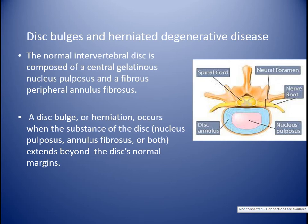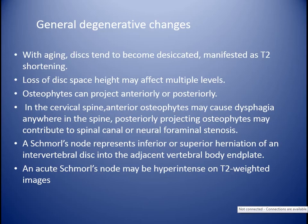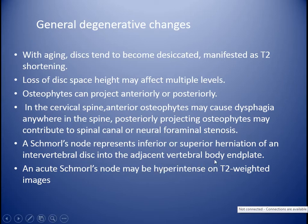Disc bulge and herniation: the normal intervertebral disc is composed of a central nucleus pulposus and peripheral annulus fibrosus. Disc bulge or herniation occurs when the substance of the disc — nucleus pulposus, annulus fibrosus, or both — extends beyond the normal disc margin. With aging, discs become degenerated, manifested as T2 shortening and decreased signal intensity on T2. Loss of disc space height may affect multiple levels. Osteophytes can project anteriorly or posteriorly. In the cervical spine, anterior osteophytes may cause dysphagia. Posteriorly projecting osteophytes may contribute to spinal canal or neural foraminal stenosis. Schmorl's nodes represent superior or inferior herniation of disc material into the adjacent vertebral body end plate.